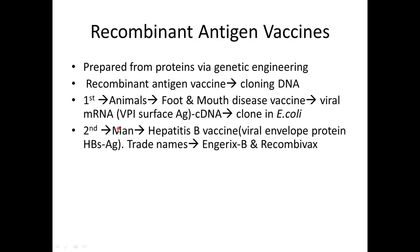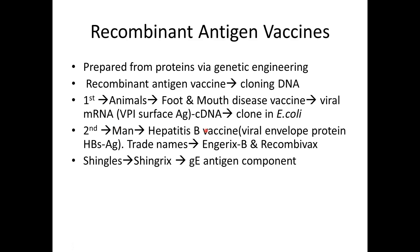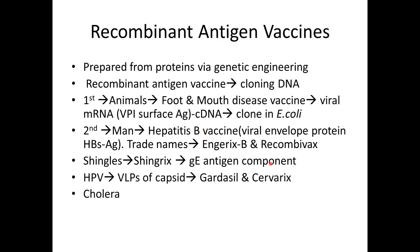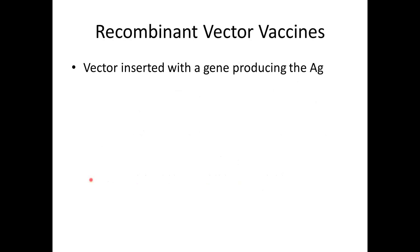The shingles vaccine is sold under the trade name Shingrix and contains the gE antigen component. The HPV vaccine uses virus-like particles — specifically capsid proteins — to elicit an immune response. It is sold under two names: Gardasil and Cervarix. HPV (Human Papillomavirus) is responsible for causing cervical cancer. Cholera also falls under the recombinant antigen vaccine category.